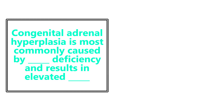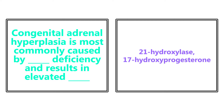Congenital adrenal hyperplasia is most commonly caused by a 21-hydroxylase deficiency and results in elevated 17-hydroxyprogesterone. This is very high yield — know that the most common cause is 21-hydroxylase deficiency, and the elevated marker is 17-hydroxyprogesterone.